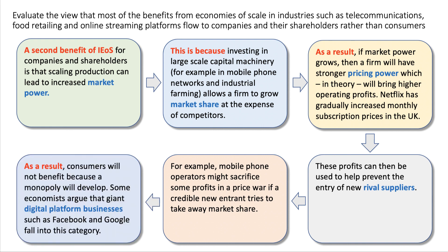As a result, consumers will not benefit because a monopoly will develop. Some economists are actually looking at those big digital platform businesses — Facebook, Google, Instagram, Amazon, Apple, Netflix — as perhaps too big. Big economies of scale, but perhaps they have too much market power, operating in the interest of their shareholders rather than consumers.